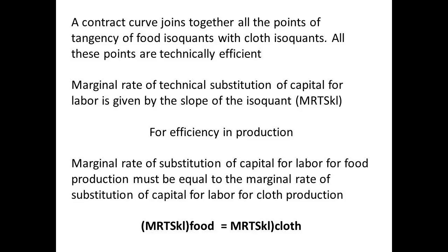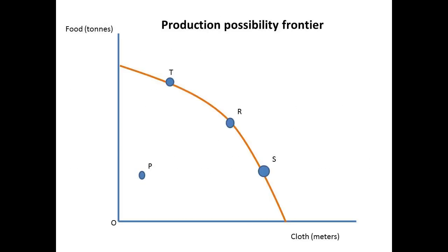is equal to the marginal rate of technical substitution of capital and labour for cloth. If this condition is not satisfied, then it is possible to reallocate resources and produce more of one good, without affecting the production of the others.